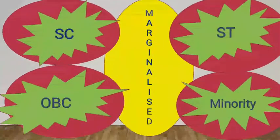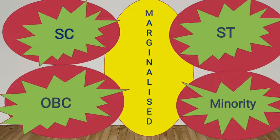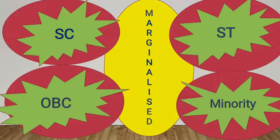Here, see this picture. The victims of backwardness comprise the present Scheduled Castes (SC), Scheduled Tribes (ST), Other Backward Classes (OBC), and many minority groups, who also suffer from backwardness. These are the marginalized groups in India.